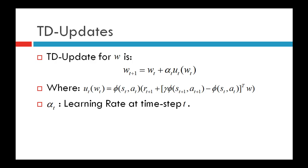Here is the TD update rule for the weight vector W. W_{T+1} is equal to W_T plus alpha_T times U_T(W_T), where U_T is a TD update. This U_T(W_T) is defined as phi(S_T, A_T) — the feature vector for state-action pair (S_T, A_T) — times the quantity R_{T+1} plus gamma times phi(S_{T+1}, A_{T+1}) minus phi(S_T, A_T) transpose W_T.